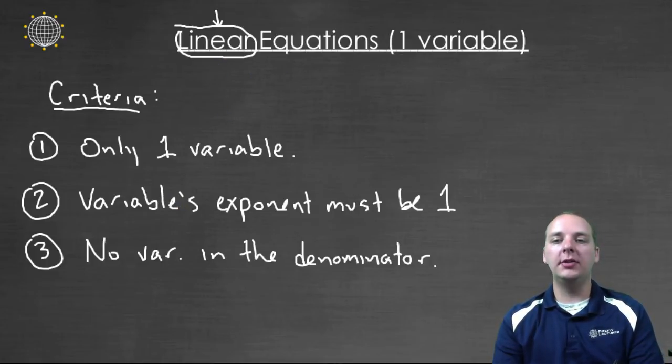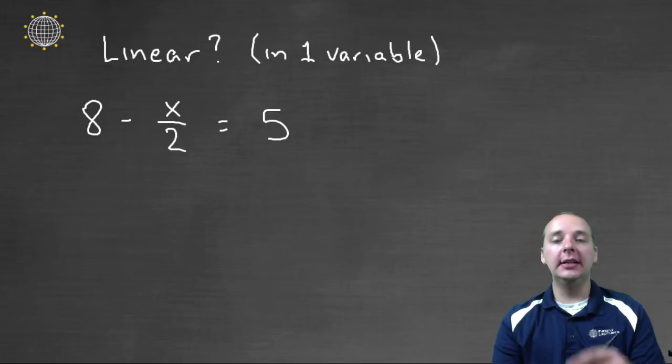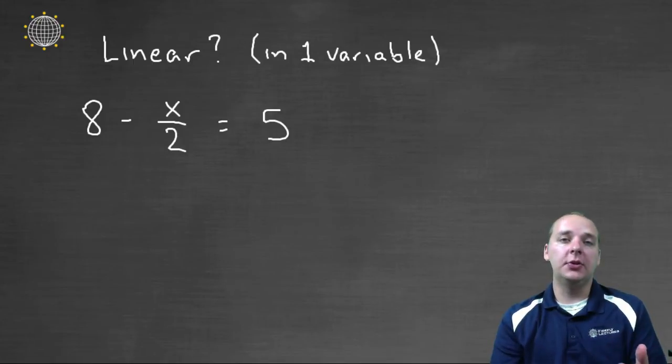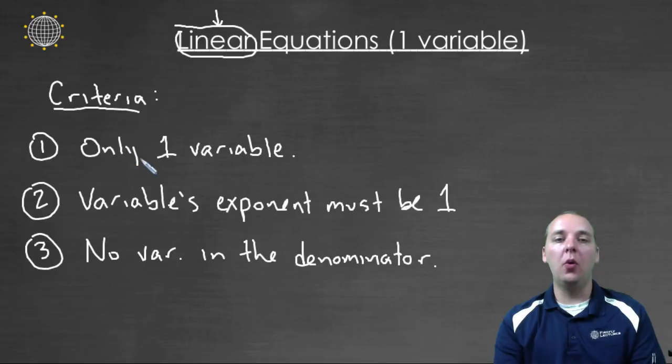So a very common question is, they'll give you just a list of different equations and they'll ask you, is this linear or is this not? Let's try a few. Let's say we had eight minus x over two equal to five, and I want to know, is this considered linear? Well, I've got one variable, so that's good. I've got one variable, only x's.